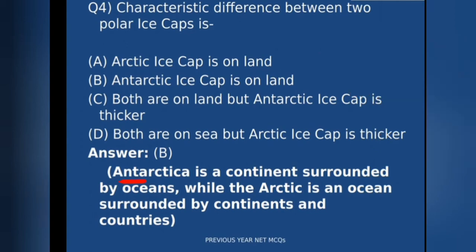Antarctica, or the Antarctic ice cap, is a continent surrounded by oceans, while the Arctic ice cap is an ocean surrounded by continents and countries. The Antarctic ice cap is on land, whereas the Arctic ice cap is on the ocean.